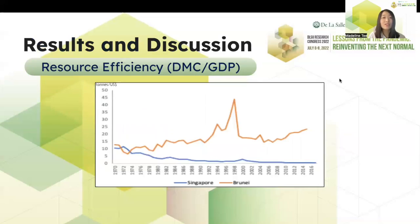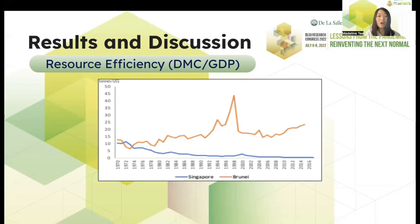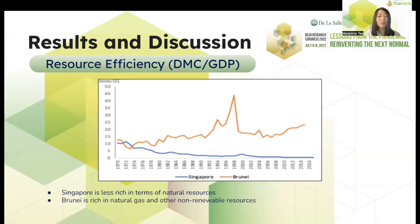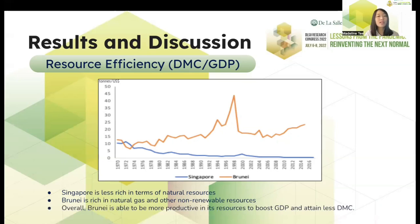We will be discussing the results through the different graphs generated. The first graph is the resource efficiency, or the DMC divided by GDP ratio. As seen in the graph, both countries' performance and resource efficiency are shown. The blue line shows Singapore's performance. Singapore is less rich in terms of natural resources as compared to Brunei, who is rich in natural gas and other non-renewable resources. From the graph, we can see that Brunei is able to be more productive in its resources to boost GDP and attain a lower DMC — that is what the resource efficiency shows.